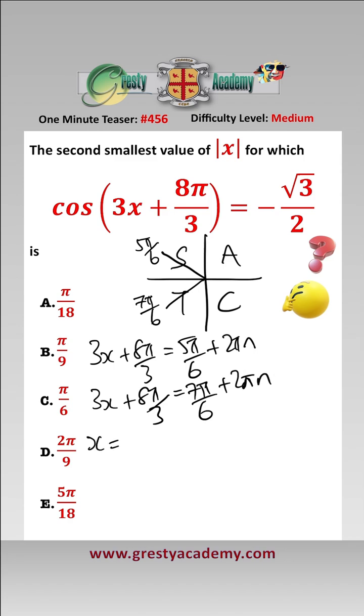And that gives us that x is either equal to minus 11 pi over 18 add 2 pi n over 3, or x is equal to minus 9 pi over 18 add 2 pi n over 3. Putting in various values,